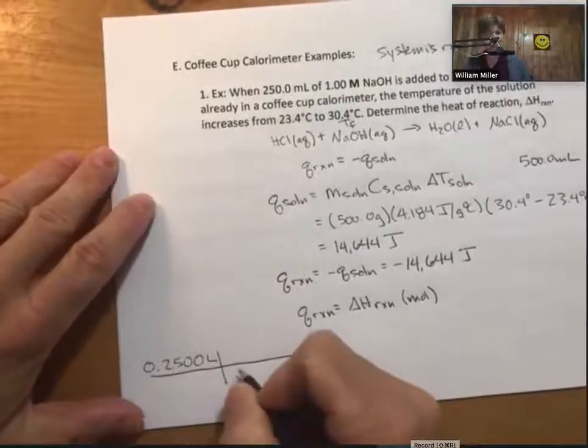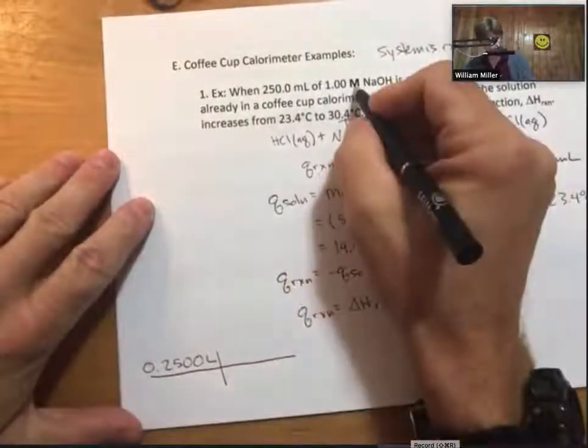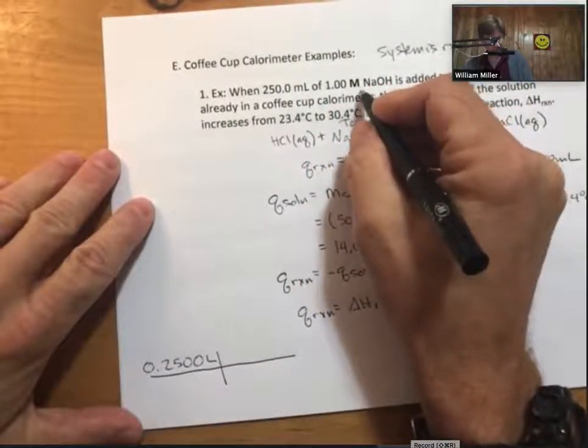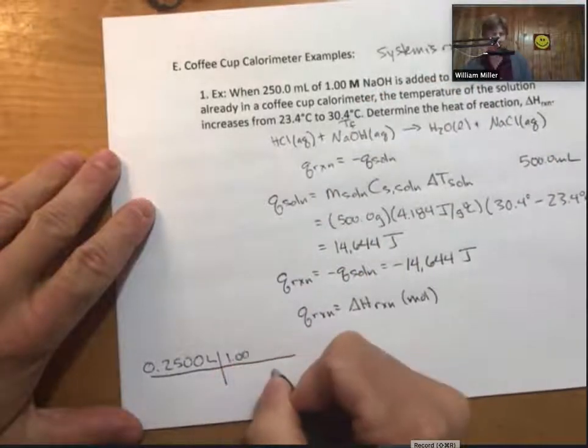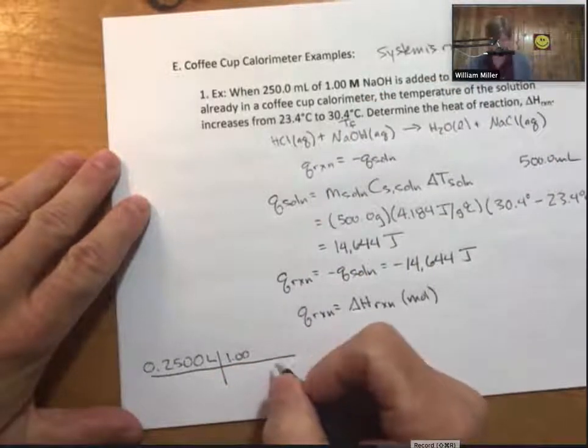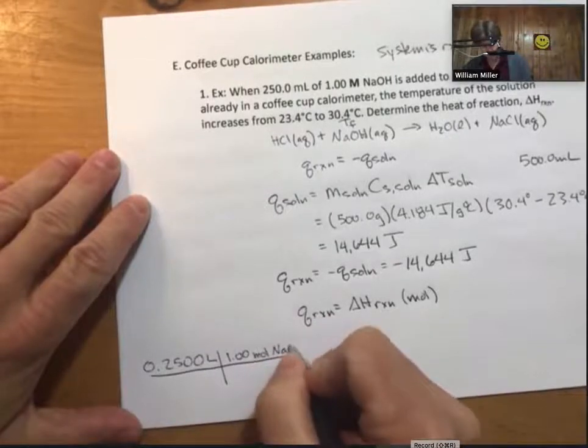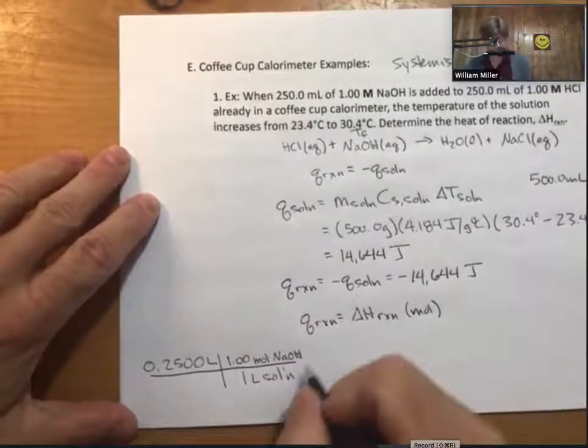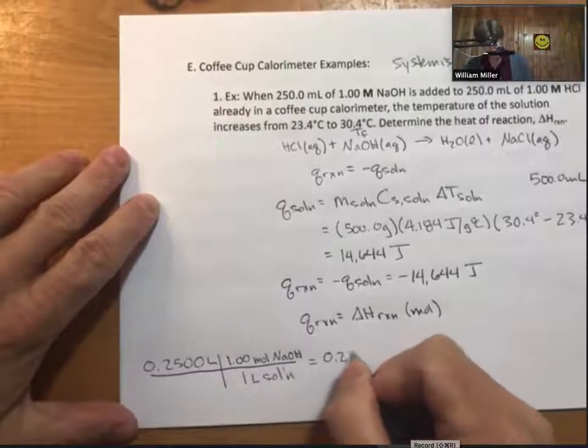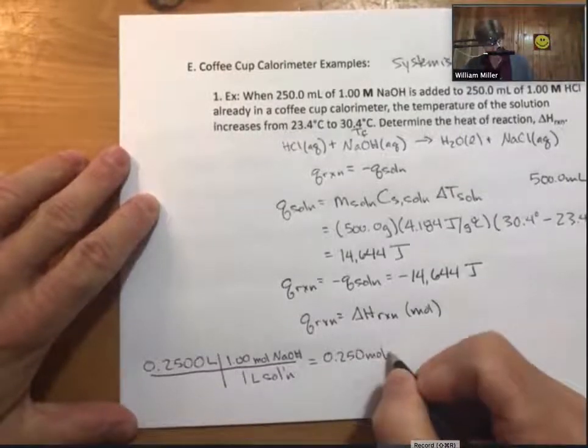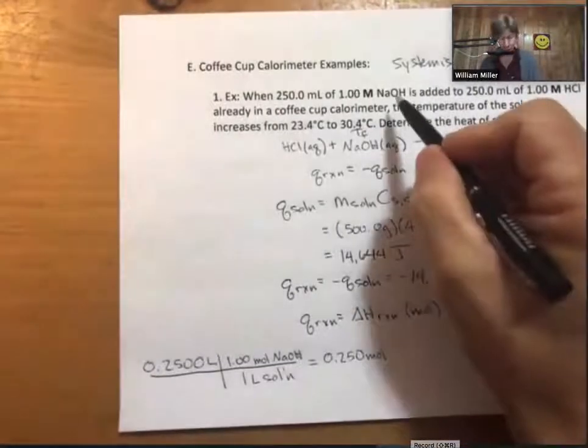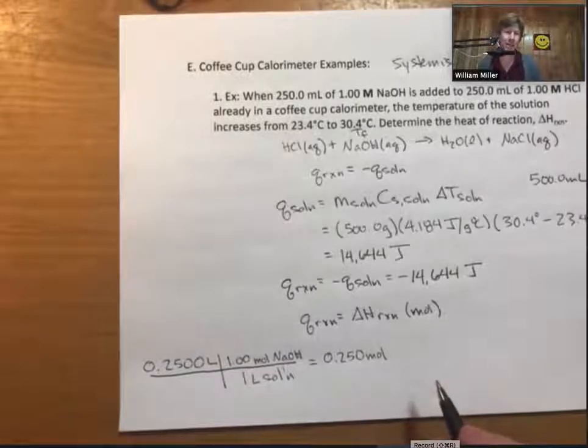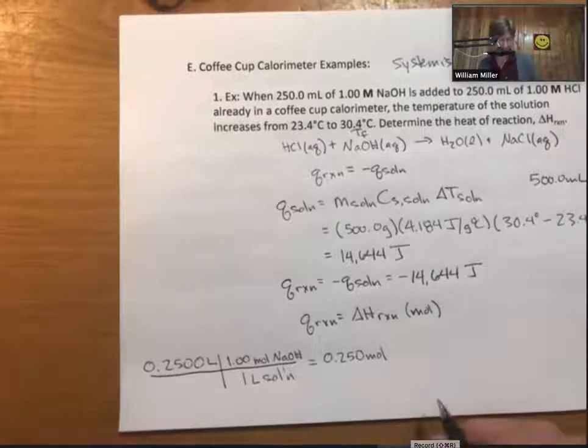You can see we have the same volume and molarity of each reactant, so this is a problem where each reactant is limiting. If we find the moles of one, it'll be the moles of the other. I'm going to solve that over here: convert our milliliters to liters, then use molarity. Using sodium hydroxide for this example, 1.00 molarity sodium hydroxide is 1.00 moles sodium hydroxide per liter of solution. Our liters cancel out, giving 0.250 moles.